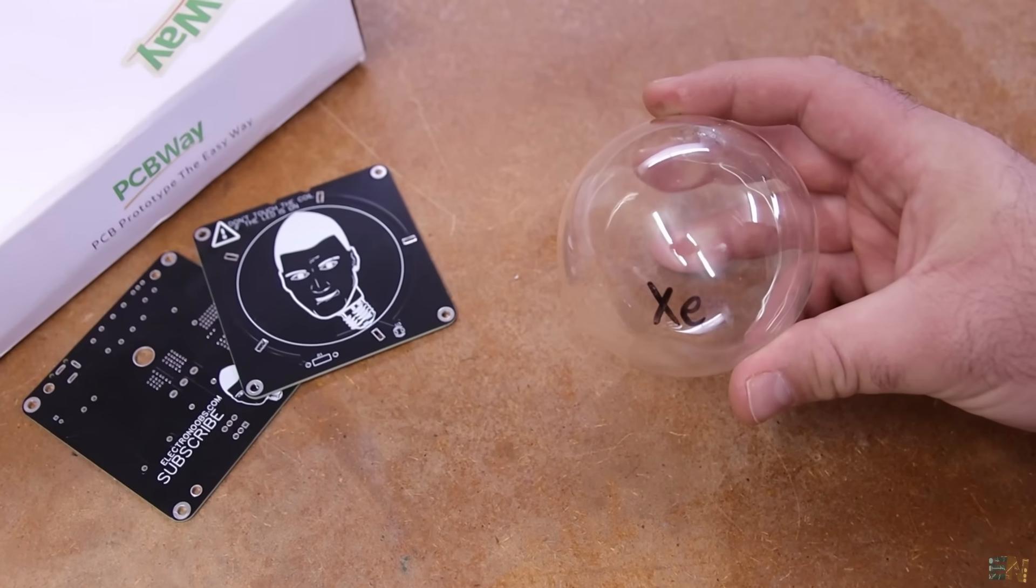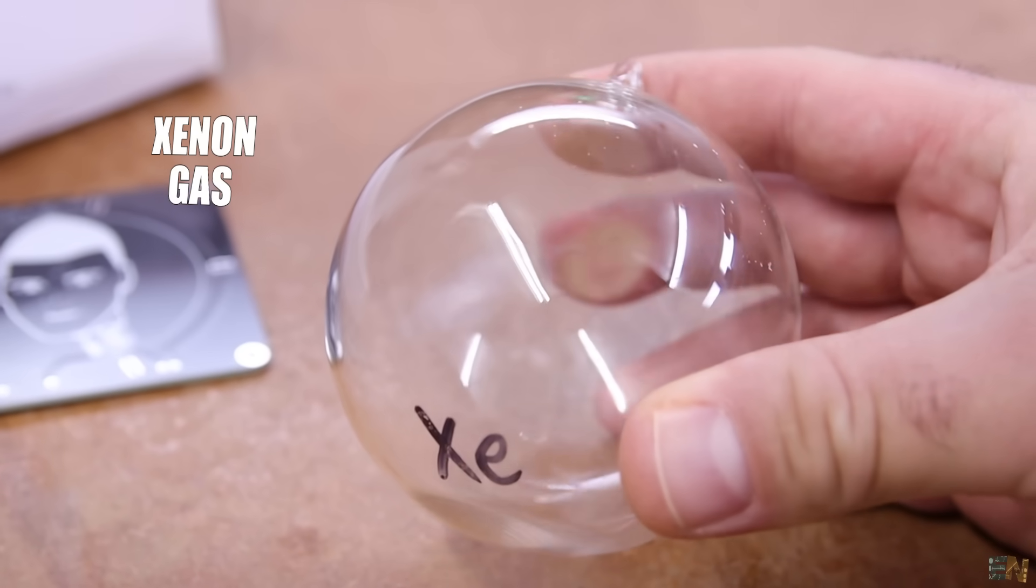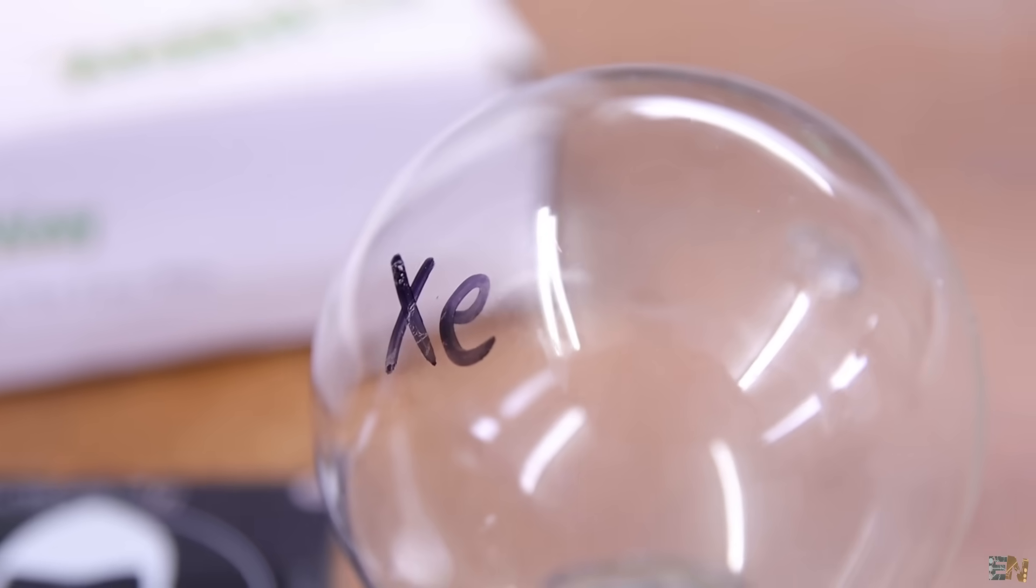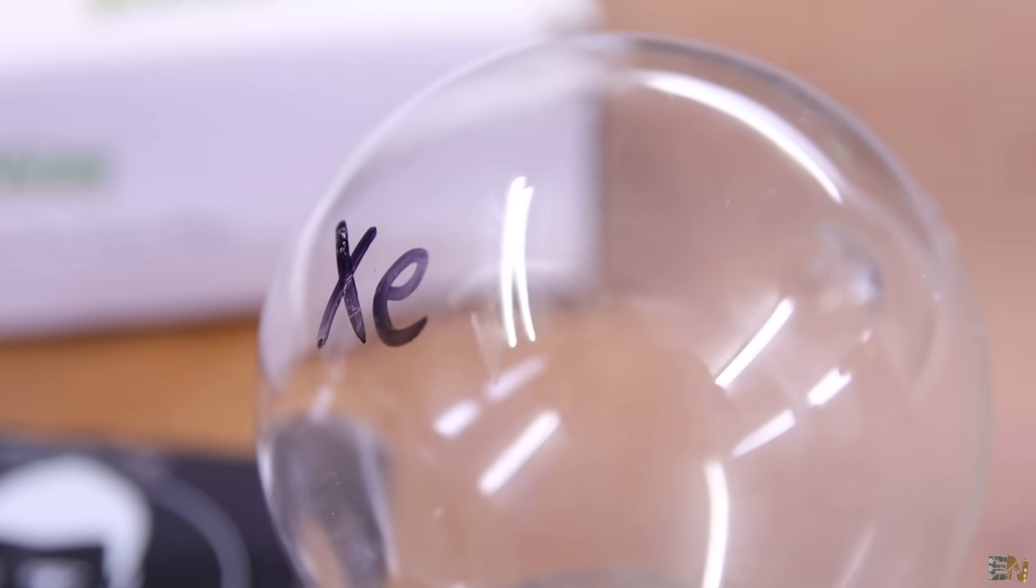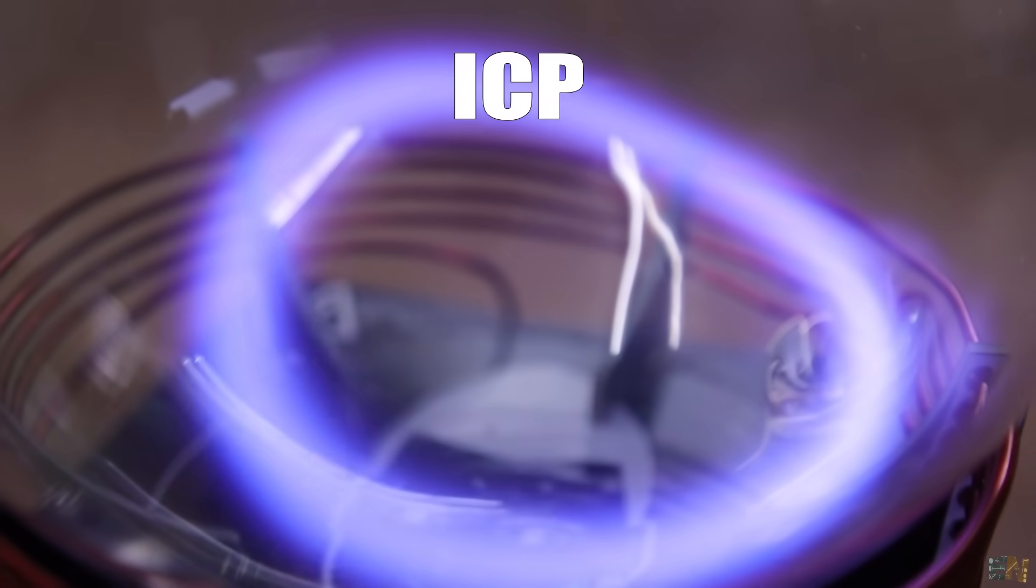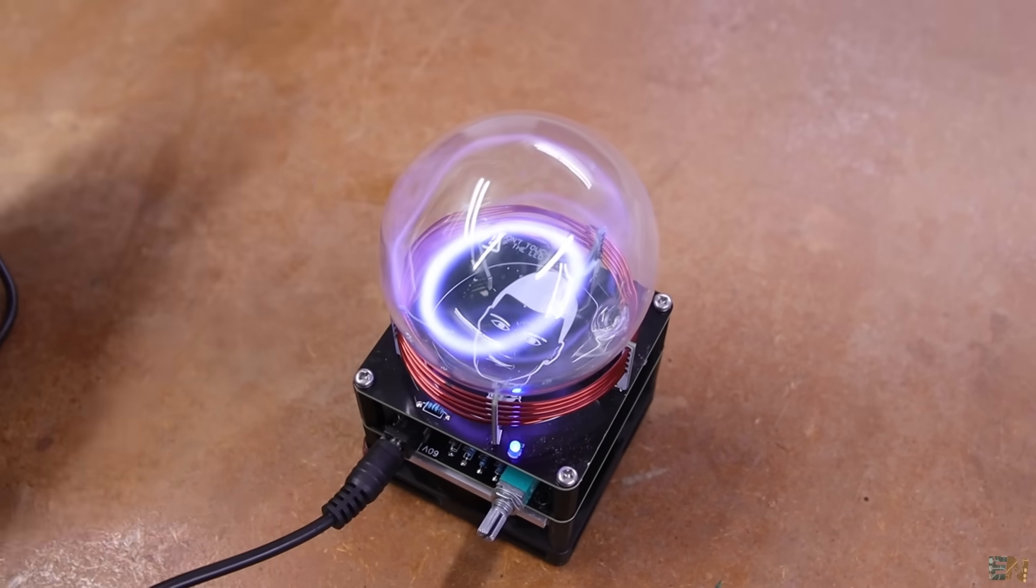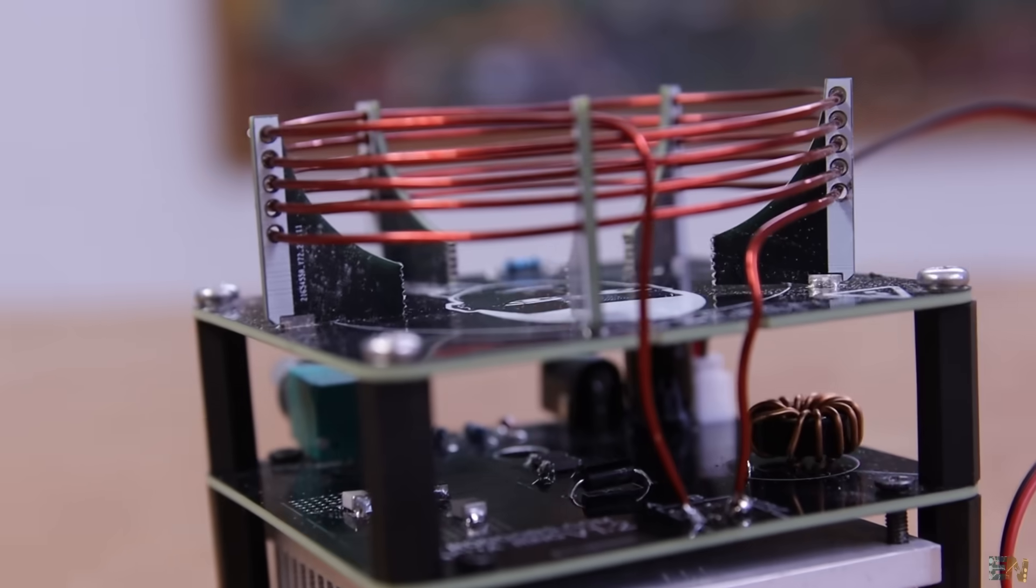What's up my friends, welcome back. Inside this glass bowl, I have xenon gas. The plasma toroid phenomenon is a great example of inductively coupled plasma or ICP. By the way, this project has no use other than looking cool. It's just an illustration of electromagnetic laws and I wanted to do it.